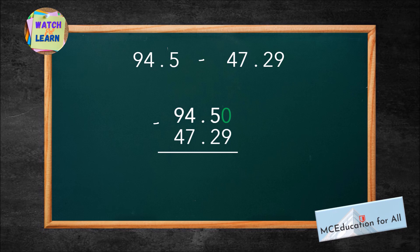0 minus 9 is no-go. So, we will use partner numbers. Partner of 9 is 1. Add 1 to 0. Then, the answer is 1. And since we use partner numbers, 5 becomes 4. Then, 4 minus 2 is 2.